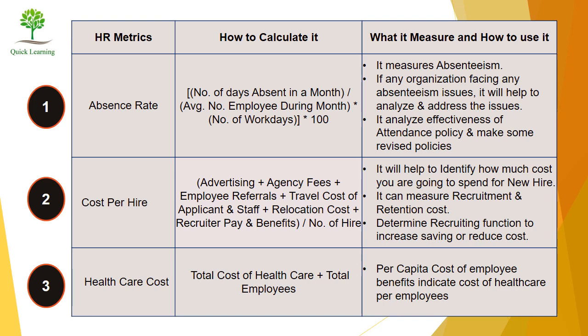Second, Cost Per Hire. Its formula is: Advertising plus agency fees plus employee referrals plus travel cost of applicants and staff plus relocation cost plus recruiter pay and benefits, divided by number of hires. This indicates how much is spent on each new hire.